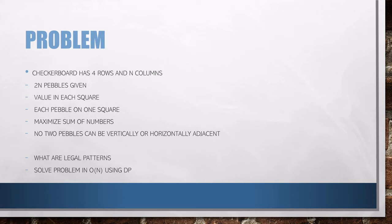We are given a checkerboard which has four rows and N columns, and has an integer written on each square. We are also given a set of 2N pebbles which we want to place on some or all of the checkerboard squares. Each pebble can be placed on exactly one square, so as to maximize the sum of the integers in the squares that are covered by pebbles.